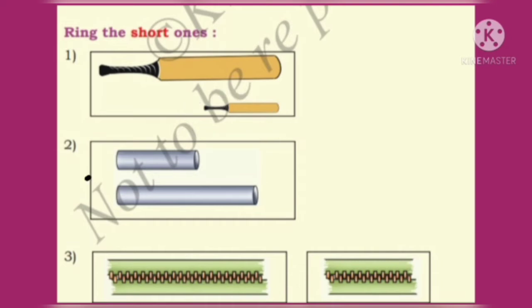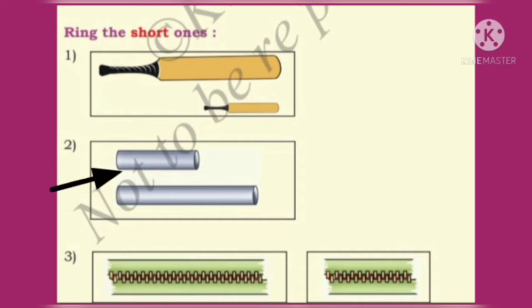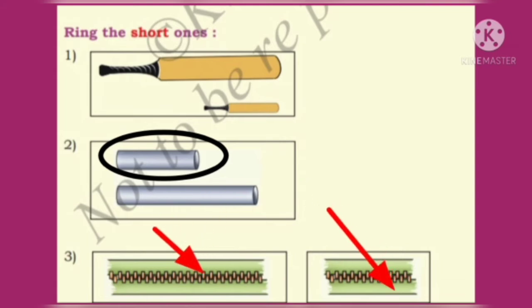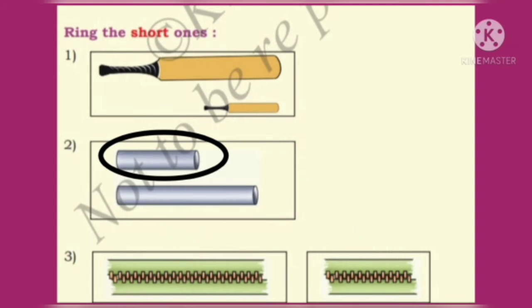Observe these two objects — two pipes. Comparing these two pipes, the first pipe is short. So, let us circle the first pipe. Next, observe these two objects: the first zip is long and the second zip is short. So, you have to circle the second object.